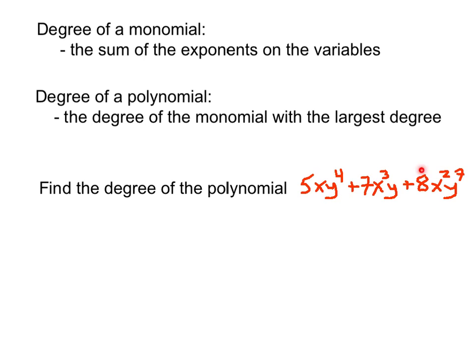This polynomial has three terms — three different monomials — making it a trinomial. We need to find the degree of each one, and whichever is largest is the degree of the polynomial. Our first term is 5x to the first, y to the fourth. The exponent on x is one and the exponent on y is four. So the degree of this monomial is 1 plus 4, which equals 5.